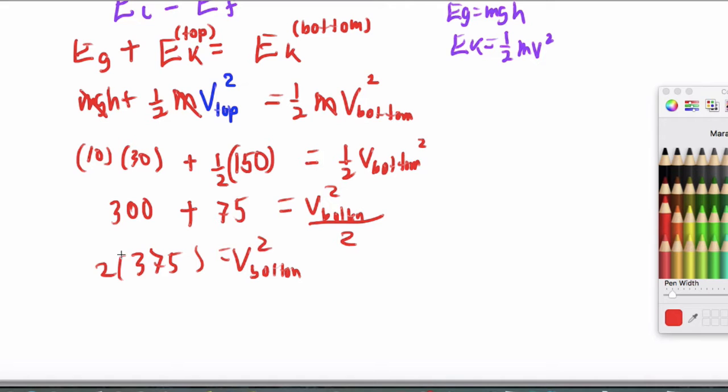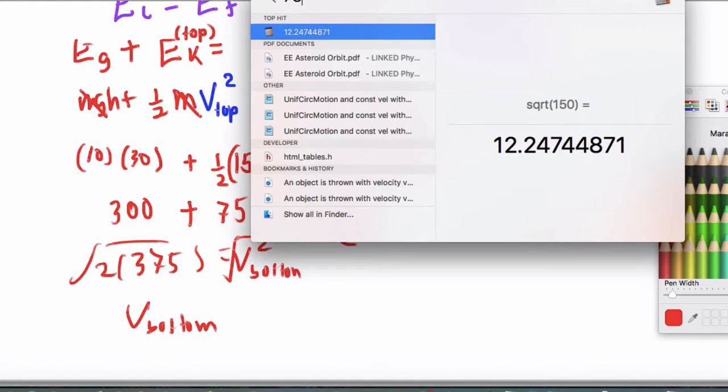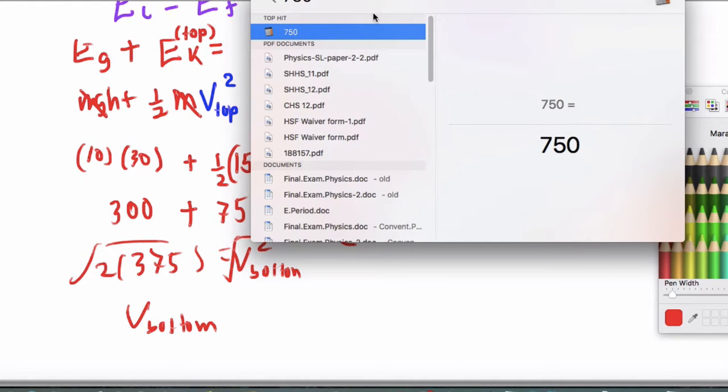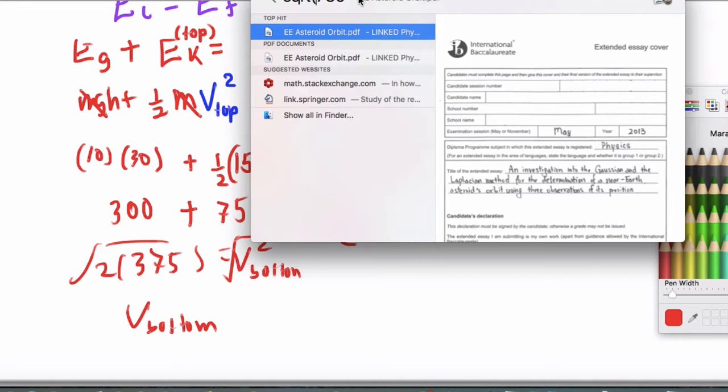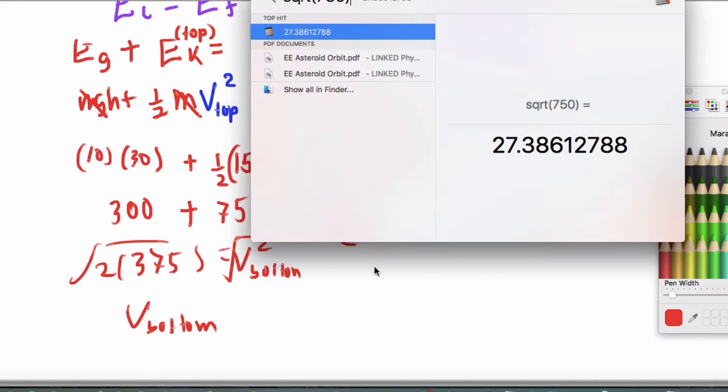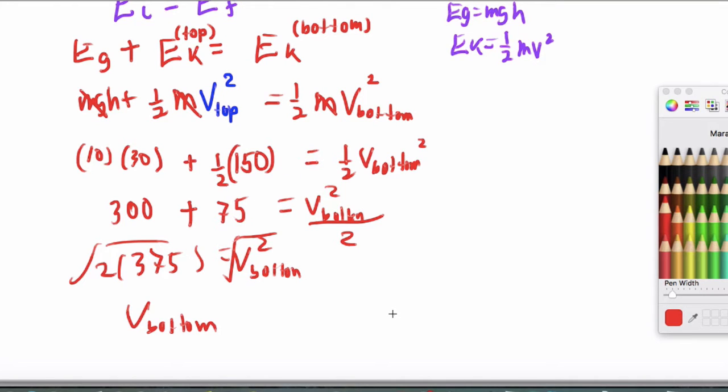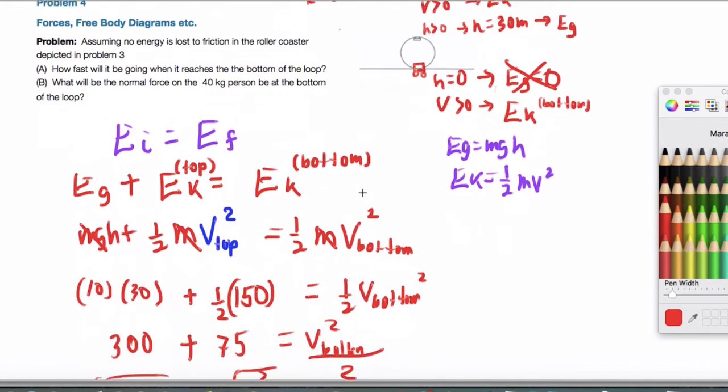So I have 375 times 2 is v bottom squared. So v at the bottom is going to be the square root of this number here. And we'll actually end up getting, it's actually the square root of 750. And that ends up being 27.4 meters per second. So that's the answer to part A.